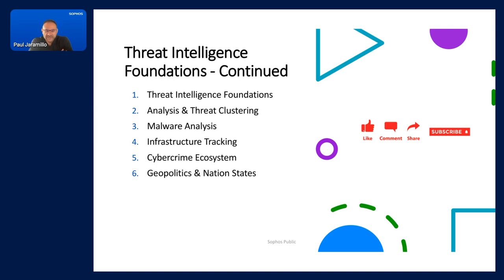A quick plug: this is a series, and we hope you'll find value in future sessions covering analysis and threat clustering, malware analysis, how we're tracking infrastructure, our cybercrime ecosystem — how do we stop ransomware or data theft — and we'll wrap up with a focus on geopolitics and nation-states, and how well-funded nation-states are targeting organizations for intellectual property or espionage. With that, we'll wrap up this first session. I hope you enjoyed it — please like and subscribe and look forward to our next one. Thank you very much.